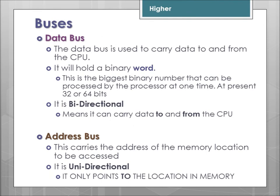The data bus is used to carry data to and from the processor. It will hold a binary word — the biggest binary number the machine can deal with at one time, currently between 32 and 64 bits. It is bi-directional, meaning it can carry data to the CPU and from the CPU.